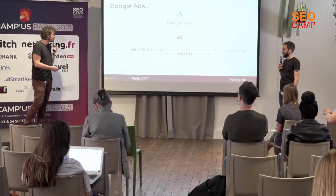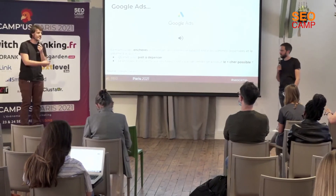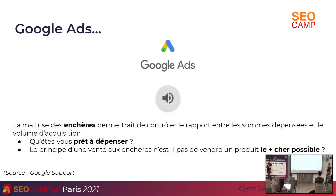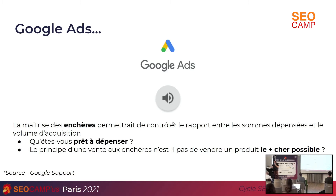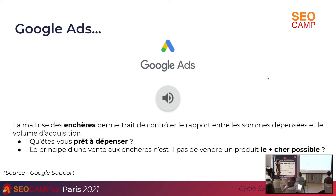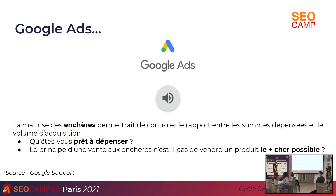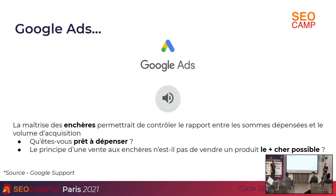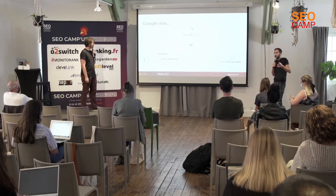Les enchères, il faut savoir ce que c'est, en tout cas quelle est la définition que Google en donne sur Google Ads : « Offre d'une somme supérieure à la mise à prix ou aux offres précédentes dans une vente au plus offrant. » C'est vraiment le plus offrant qui intéresse Google, et le but de l'enchère, c'est capter le plus d'argent ou avoir le meilleur prix pour ce qu'il a à offrir.